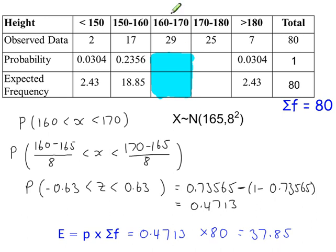So this probability here, x between 160 and 170, using this normal distribution, standardizing each value. We've got our Z values, so the probability from the tables: 0.4713. So the expected frequency here, our probability times the total frequency, so 37.85.